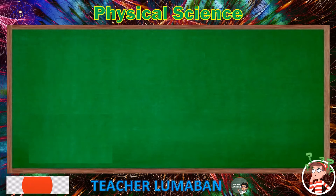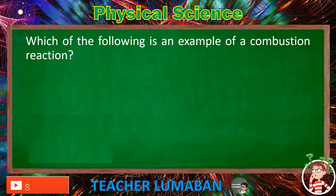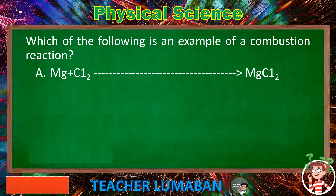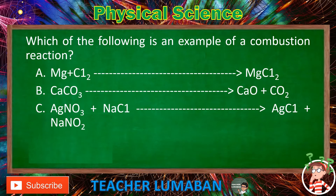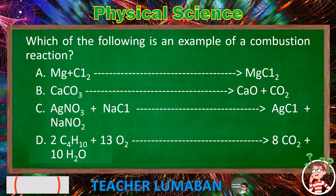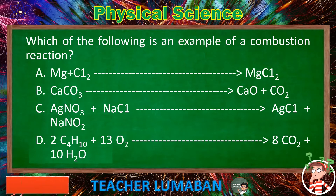Which of the following is an example of a combustion reaction? Letter A: Mg + Cl₂ → MgCl₂. Letter B: CaCO₃ → CaO + CO₂. Letter C: AgNO₃ + NaCl → AgCl + NaNO₂. Letter D: 2C₄H₁₀ + 13O₂ → CO₂ + H₂O. Choose the suitable answer based on the given choices in 5 seconds.